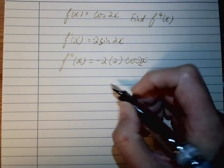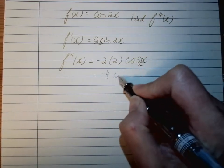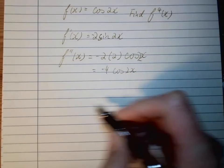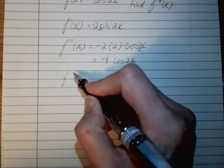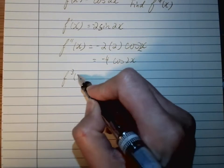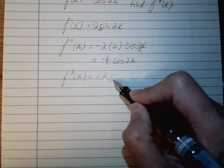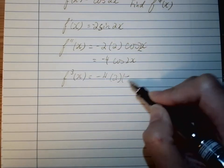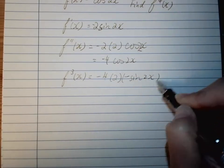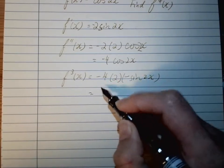One more time. The third time, I've got -4 times -2, and cosine becomes negative sine, so I have positive 8sin(2x).